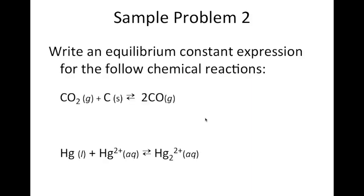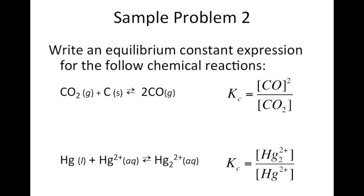Let's try a couple more. For the first reaction in this new set, Kc equals the concentration of carbon monoxide squared divided by the concentration of carbon dioxide. We do not include the solid carbon in the equilibrium expression because its concentration remains constant during the chemical reaction.